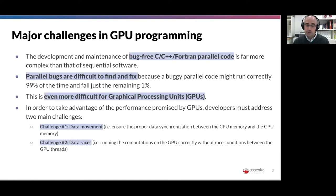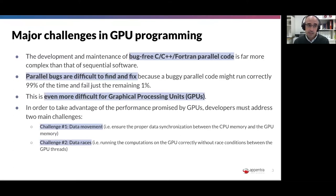One of the main sources of parallel bugs is race conditions, which can appear in production code running on Cori. But when you try in your laptop or development environment to reproduce the conditions that trigger the bug, many times it's very difficult to reproduce. The code can run correctly 99% of times and fail just 1% in production, making it even more difficult to reproduce in the development environment.